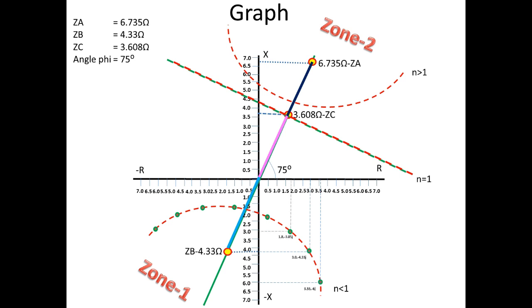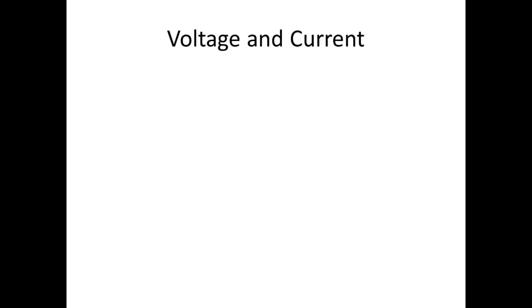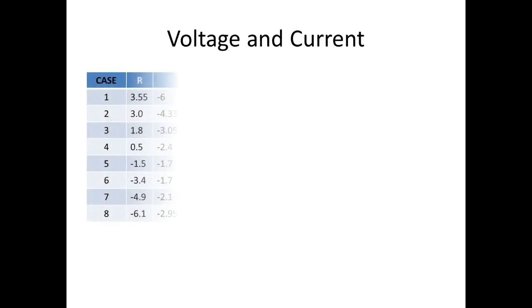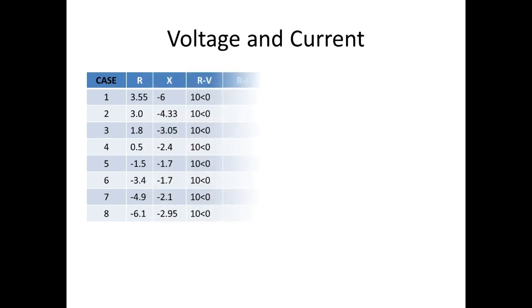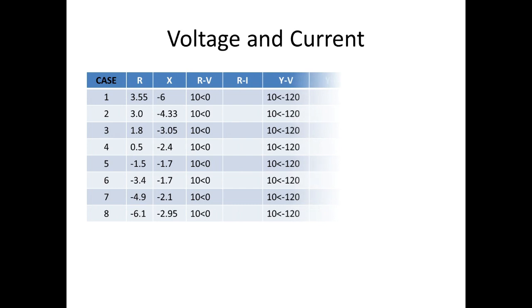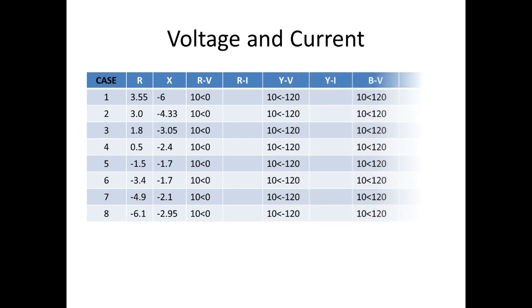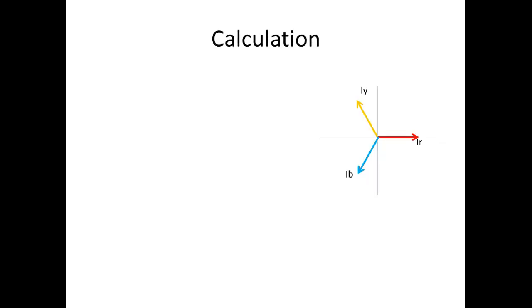Now I am going to test the pole slip protection using a state sequence. For that I need corresponding voltage and current values for the resistance and reactance points. I am going to form a simple step in which voltage is fixed as a constant 10 volts and I will simulate a symmetrical fault, so all three phases have a 120-degree phase shift. All values which we calculated will be organized into a table column.